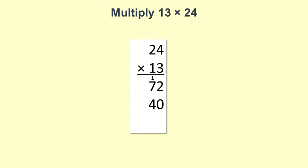Then bring down a 0. 1, 4 is 4, 1, 2 is 2. Add them up to get 312.